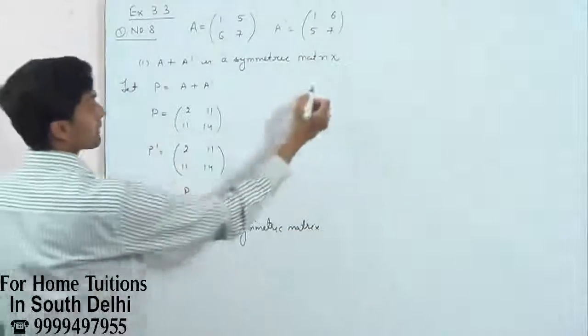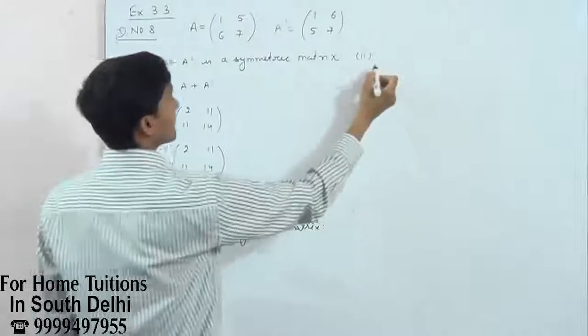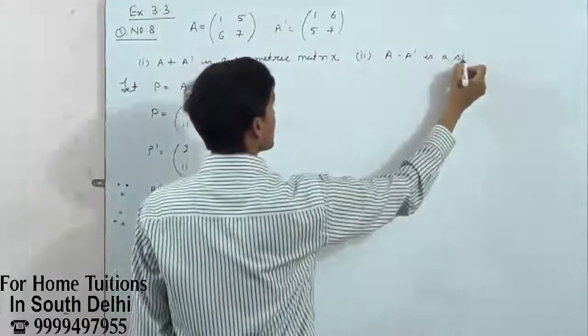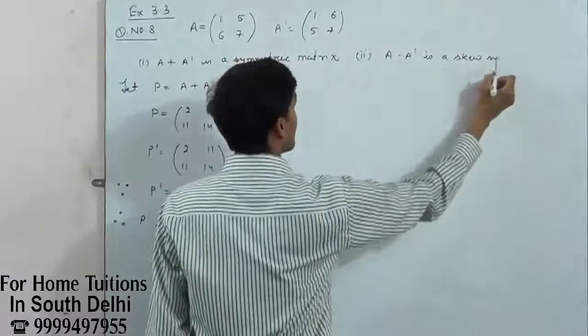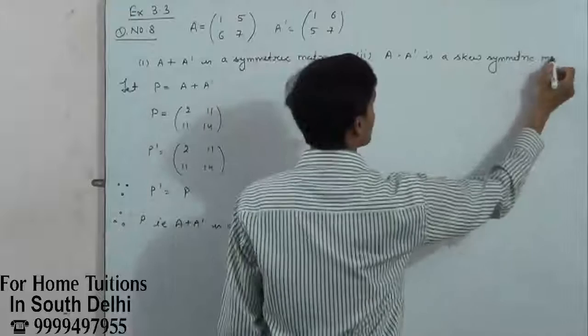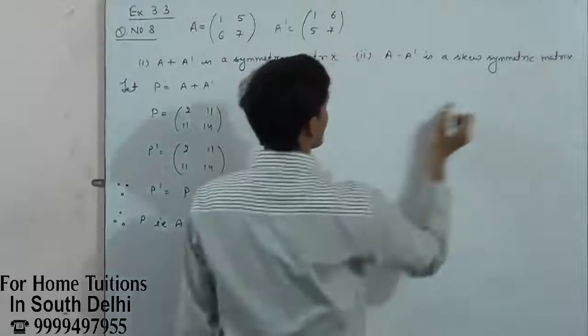Now the second part. Second part, what are we doing? Prove that A minus A dash is skew-symmetric.